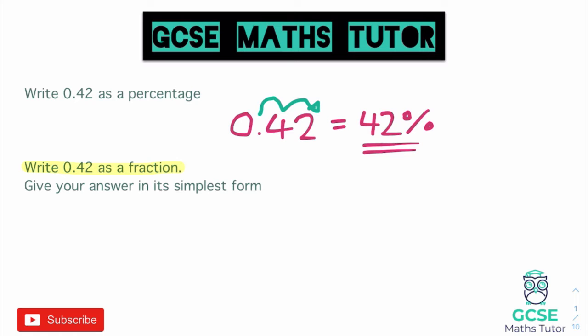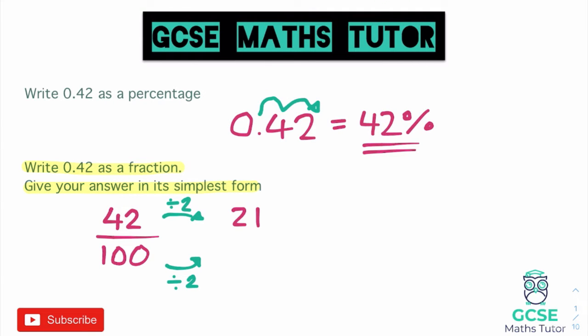Because 42 percent as a fraction means 42 per 100. To write 42 per 100, that is literally just writing it as a fraction: 42 out of 100. Now this question says to give your answer in its simplest form. So we look at the top and bottom and see what they both divide by. Both of these are even so we can divide them both by 2. Dividing the top by 2 gives us 21, and dividing the bottom by 2 gives us 50. So that becomes 21 out of 50.